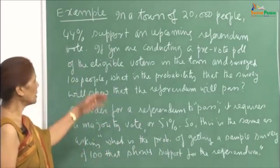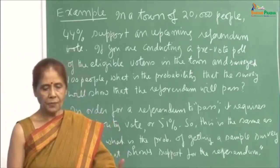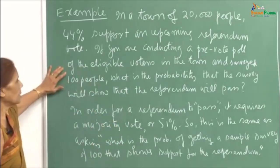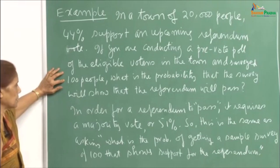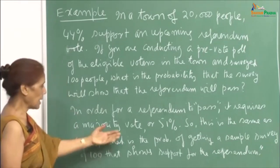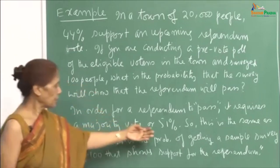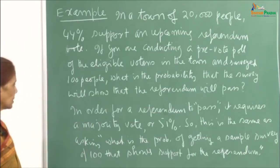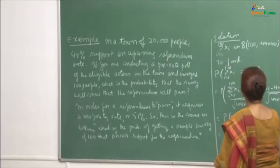This is just a pre-vote survey of 100 people. You want to know what is the probability that the referendum will pass — meaning, out of those 100 people, 51 should say yes. One can model this situation using binomial random variables: Xᵢ equals 1 (success) if the person supports the referendum, 0 (failure) otherwise.